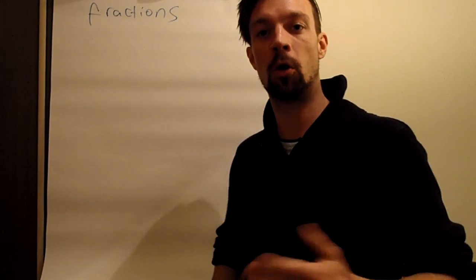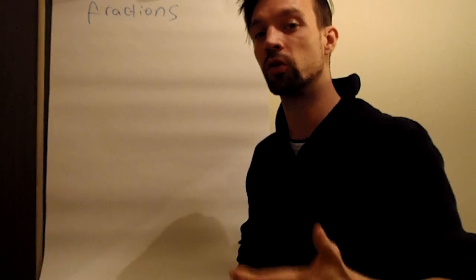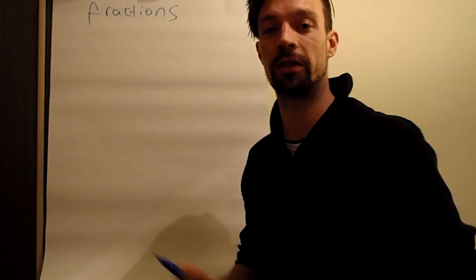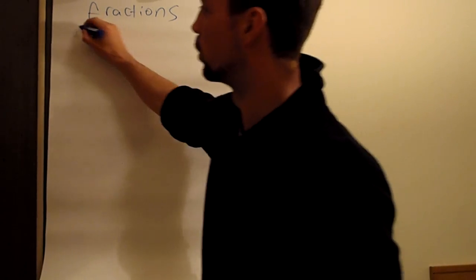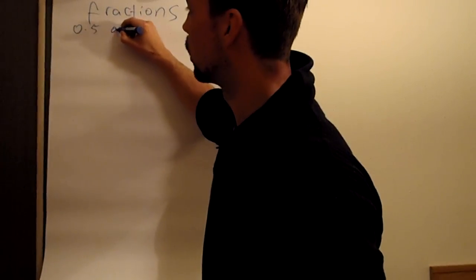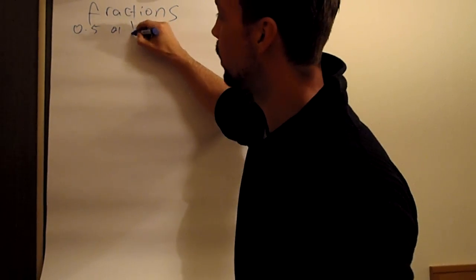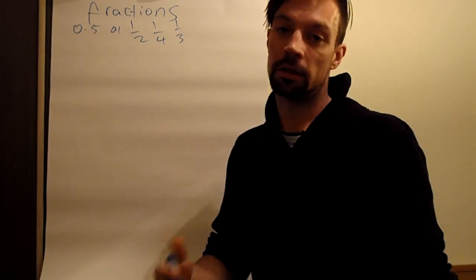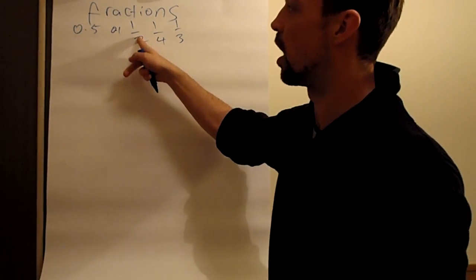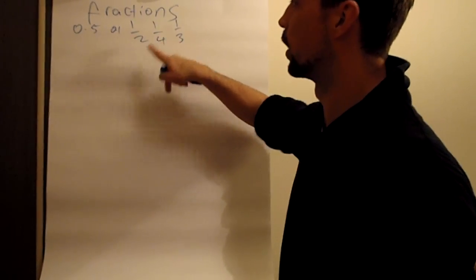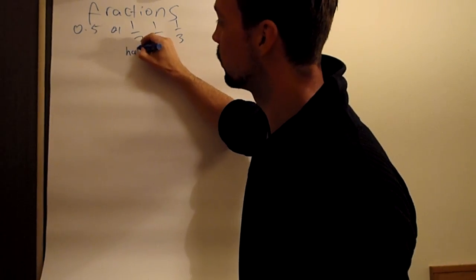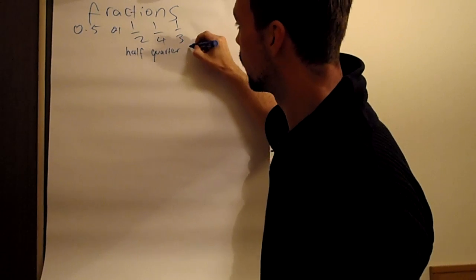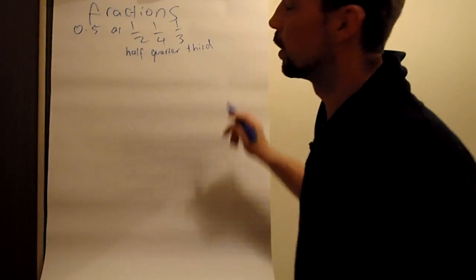In the first video we talked about whole numbers, so 0, 1, 2, 3, 4, 5. And when we talk about fractions, we're talking about numbers that are smaller than whole numbers, so 0.5, 0.1. Also I imagine you've seen these: these are also fractions. This is half, this is a quarter, and this is a third.